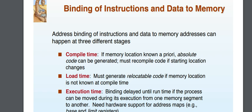For compile time binding, we don't just need coding — we need to change the machine level language code. If a memory location can be known at compile time, absolute code can be generated. However, if the starting location changes, the code must be recompiled.